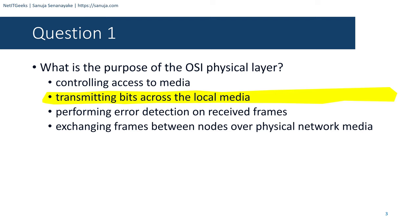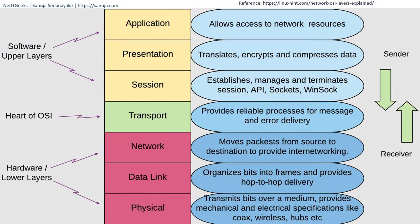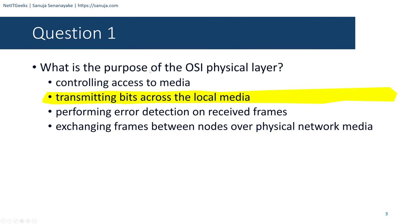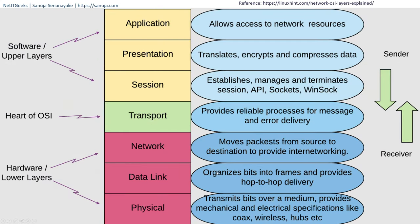If you recall the OSI model, it has the application, presentation, session, transport, network, data link, and physical layers. The upper software layers include application, presentation, and session. The transport layer is the heart of the OSI model. The hardware layers include network, data link, and physical. The physical layer is responsible for the transmission of data into mechanical or electrical signals, depending on the medium — for example, electrical pulses over cat5 or cat6 copper cable, or light pulses over fiber optic cable.